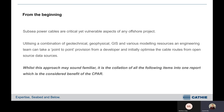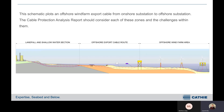Subsea power cables are critical yet vulnerable parts of any offshore project. Utilising the combination of geotechnical, geophysical, GIS and various modelling resources, the engineering team can take a point-to-point provision from a developer and initially optimise the cable routes from open source data. This schematic plots an offshore wind farm export from an onshore substation to an offshore substation, and the CPAR will consider each of these zones separately in separate sections and pull out the challenges within them for a particular project.